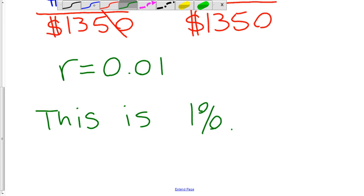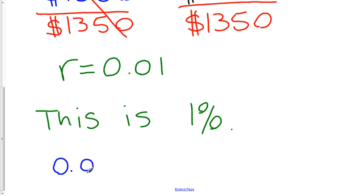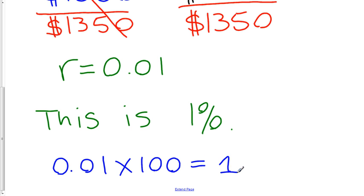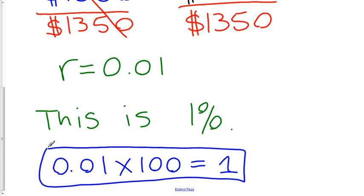Why? Because 0.01 times 100 is 1. This is why the rate is 1%. And that is how you find the rate of commission when you have the sales and the amount of commission, but not the rate.